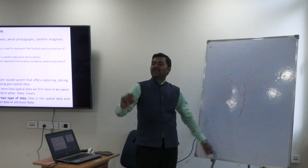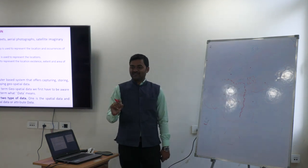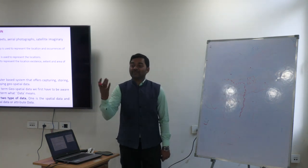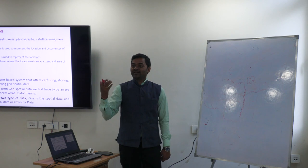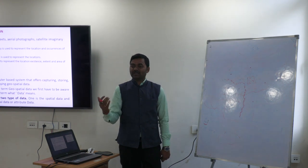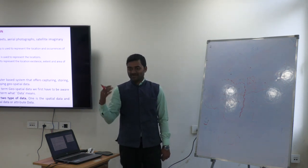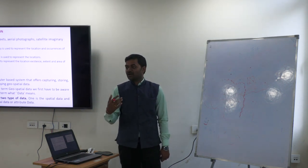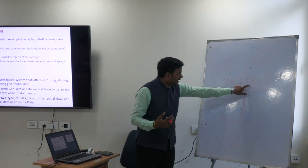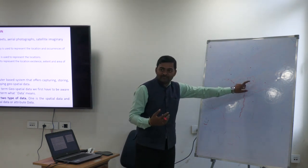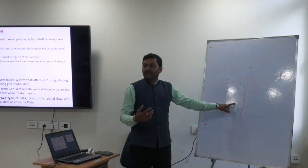Data that has latitude and longitude is called spatial data — also called geographical data. In GIS language, we call it spatial data. KK university on the map is spatial data; a road is spatial data.